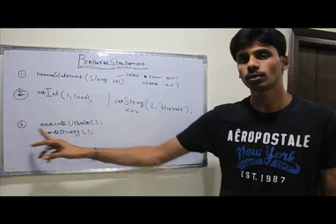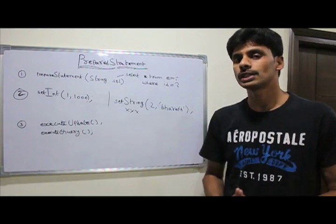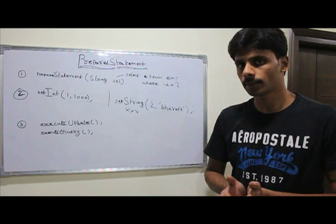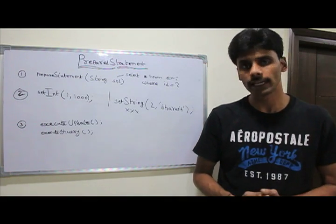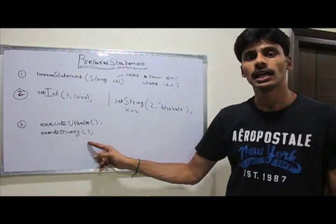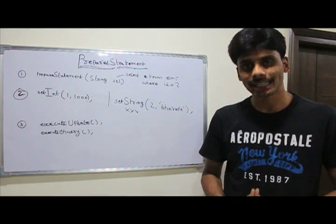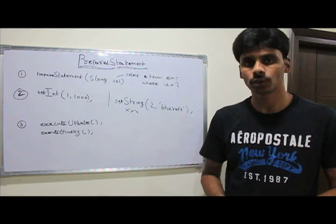wherein executeUpdate is going to return you an integer result, which is the number of rows that get updated in the database, or the number of rows that get inserted or deleted, whereas the executeQuery is going to always return you a result set, and you know how to iterate through the result set.